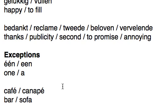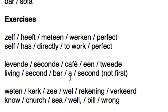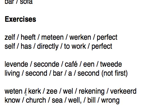Now some exercises. I'll give you three seconds to pause the video and try the first row. Three, two, one — zelf, heeft, meteen, werken. Second row — three, two, one — levende, seconde, café, een, tweede. Third row — three, two, one — weten, kerk, zie, wel, rekening, verkeerd.